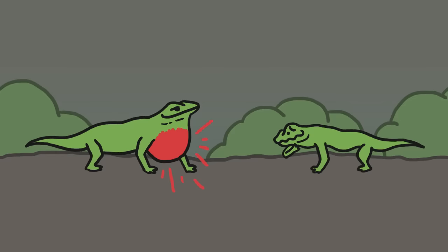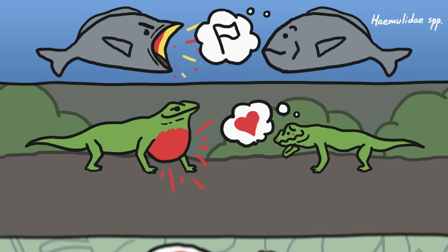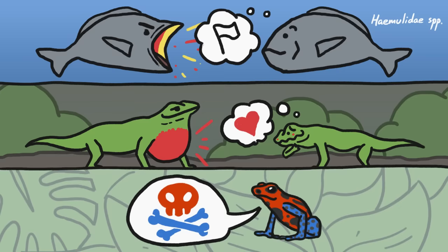For the very same reason that bright colors are risky—they make you easy to spot—they're a brilliant way for animals to communicate with each other. Like showing off for a potential mate, or deterring a potential rival, or even advertising to a predator that they aren't good to eat.